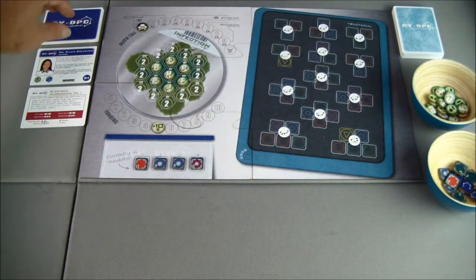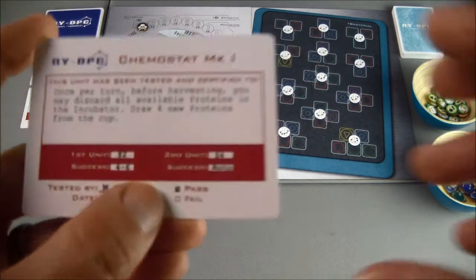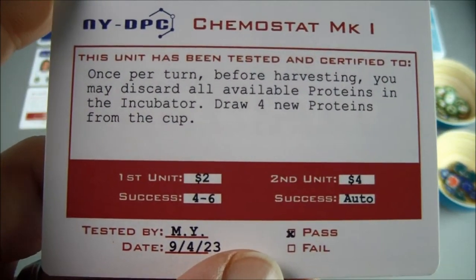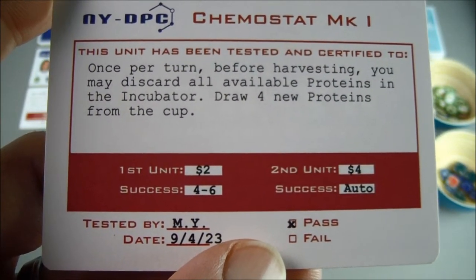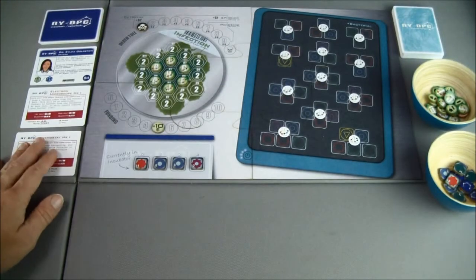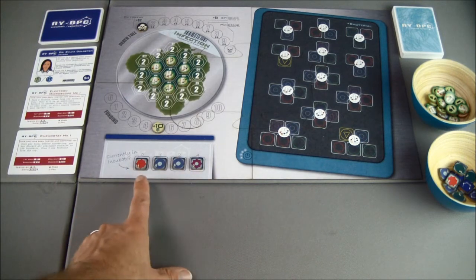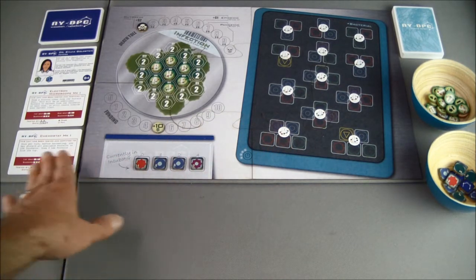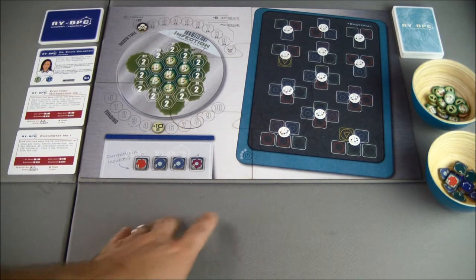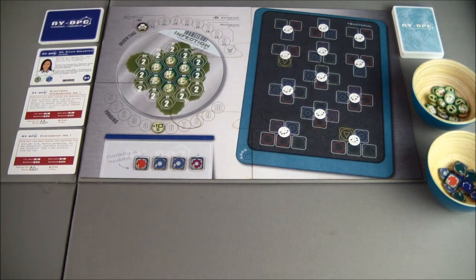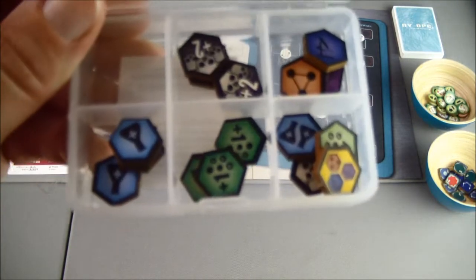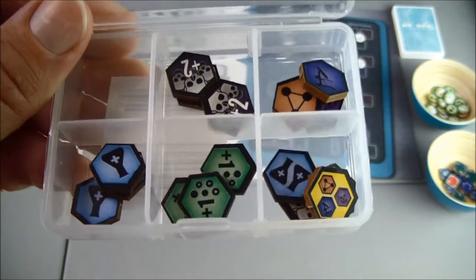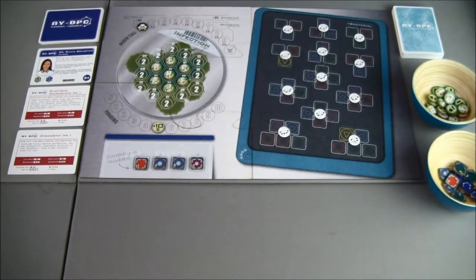And then finally we have a chemostat mark one. Once per turn before harvesting you may discard all available proteins in the incubator and draw four new proteins from the cup. And this one also costs two and four for a second unit. And that would be if we had a bunch of proteins here that weren't very useful to us. But everything's useful in the beginning of the game. We can activate the chemostat, wipe all four of them out to a discard pile and draw four new ones. There are additional tokens for the game and these will come into play as we purchase personnel or interns, so these tokens will become available. And when they do I'll explain how those work.